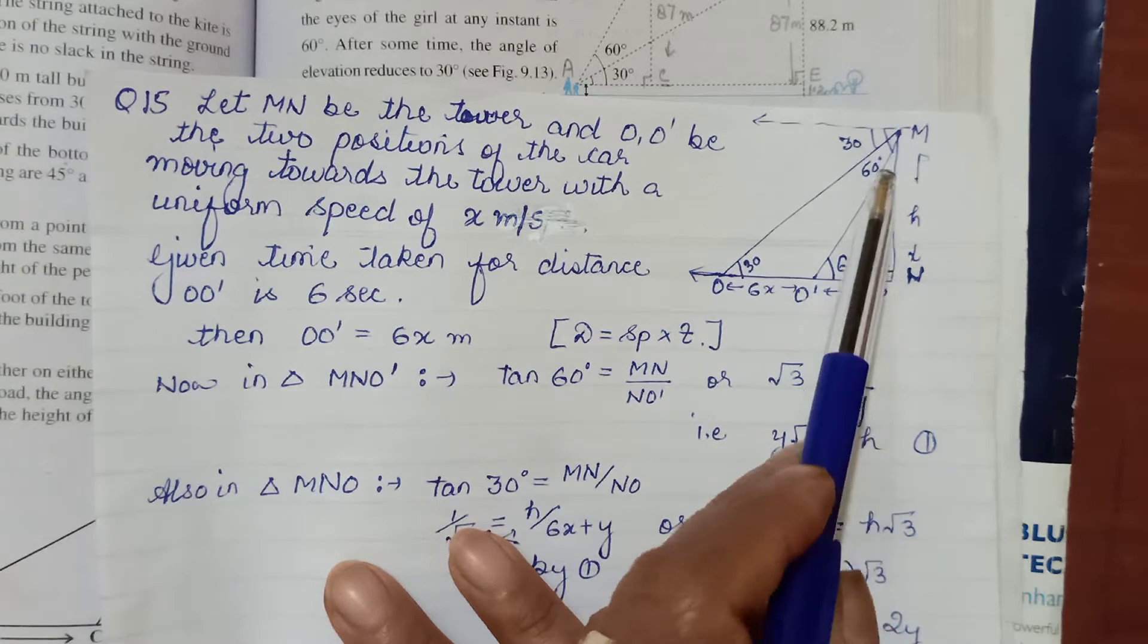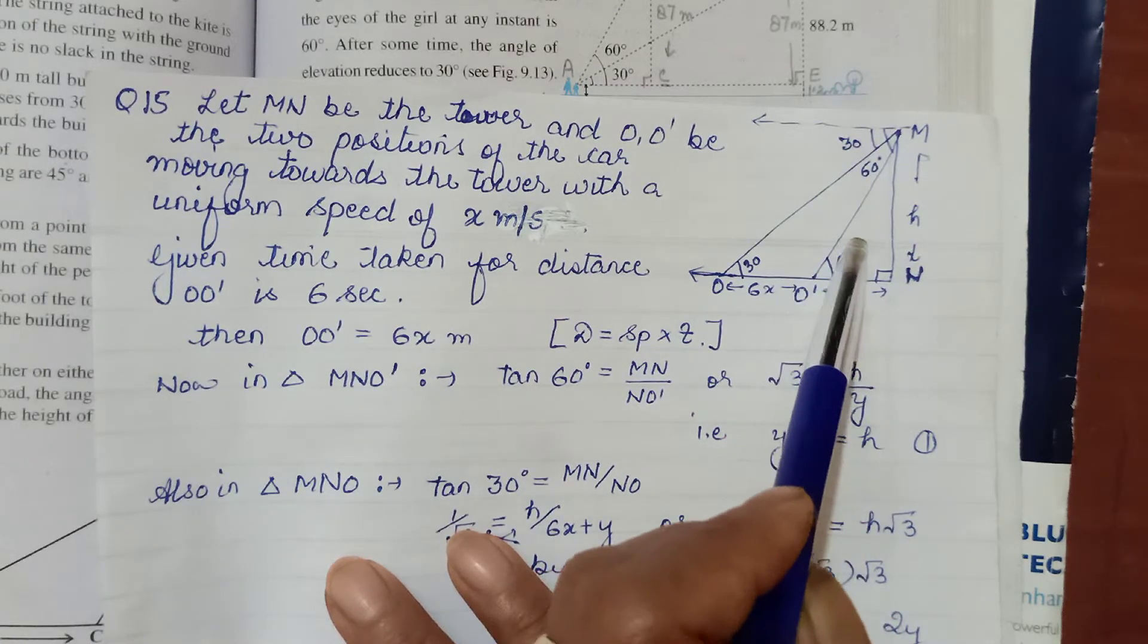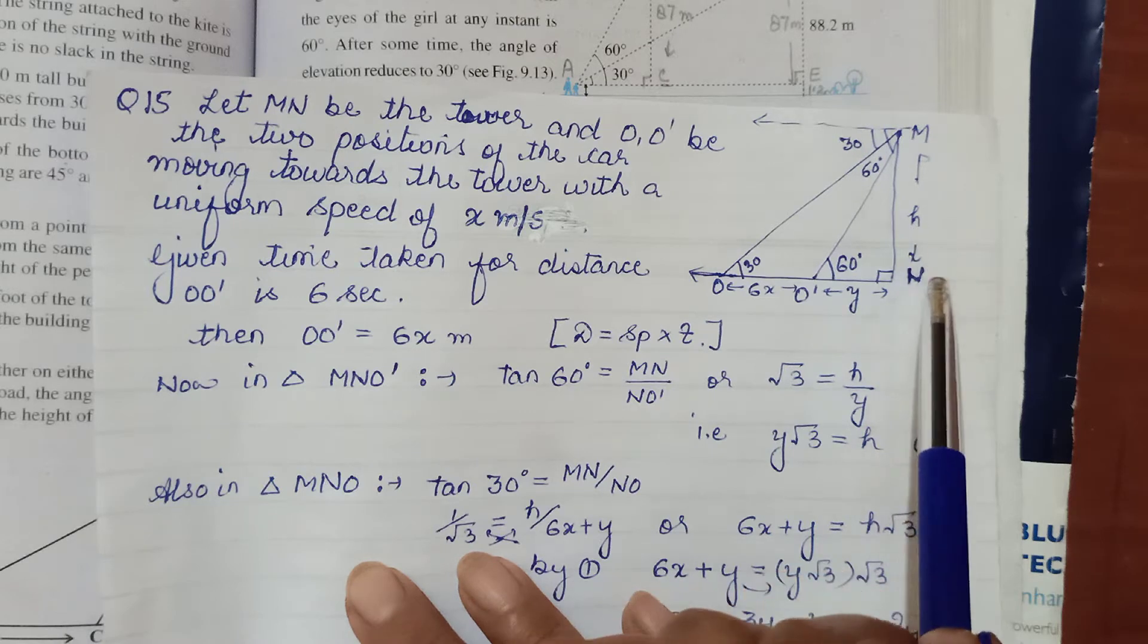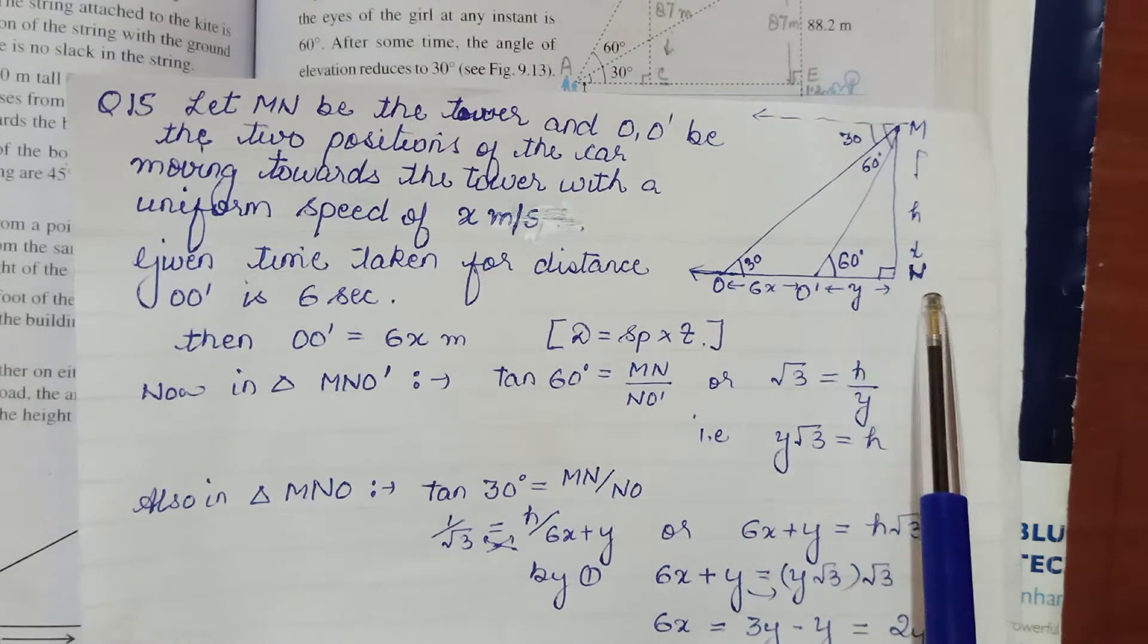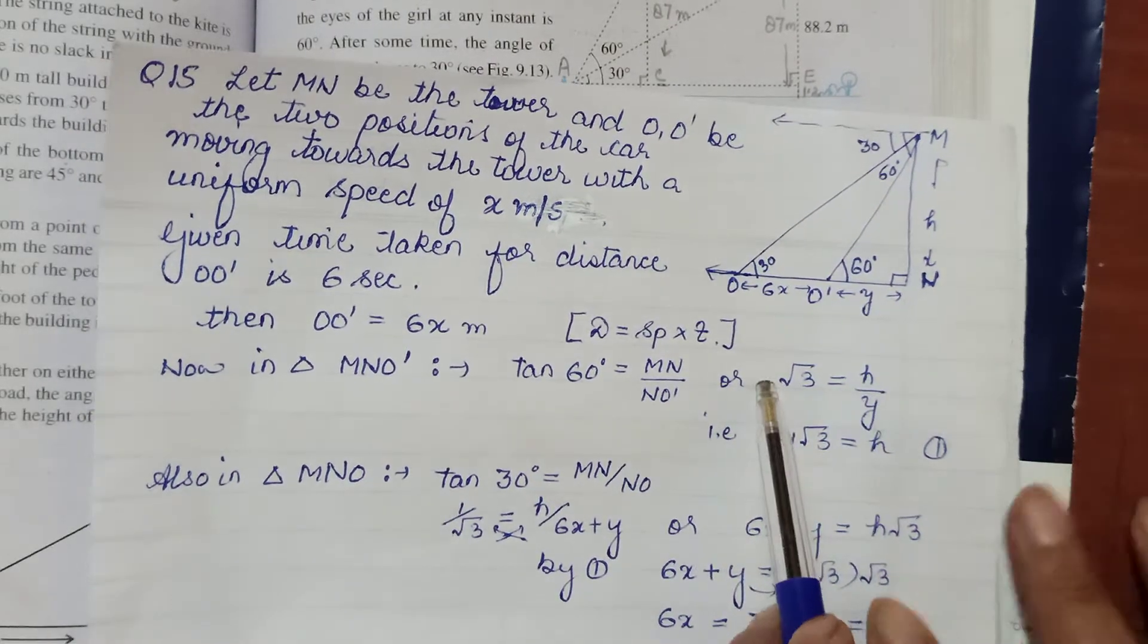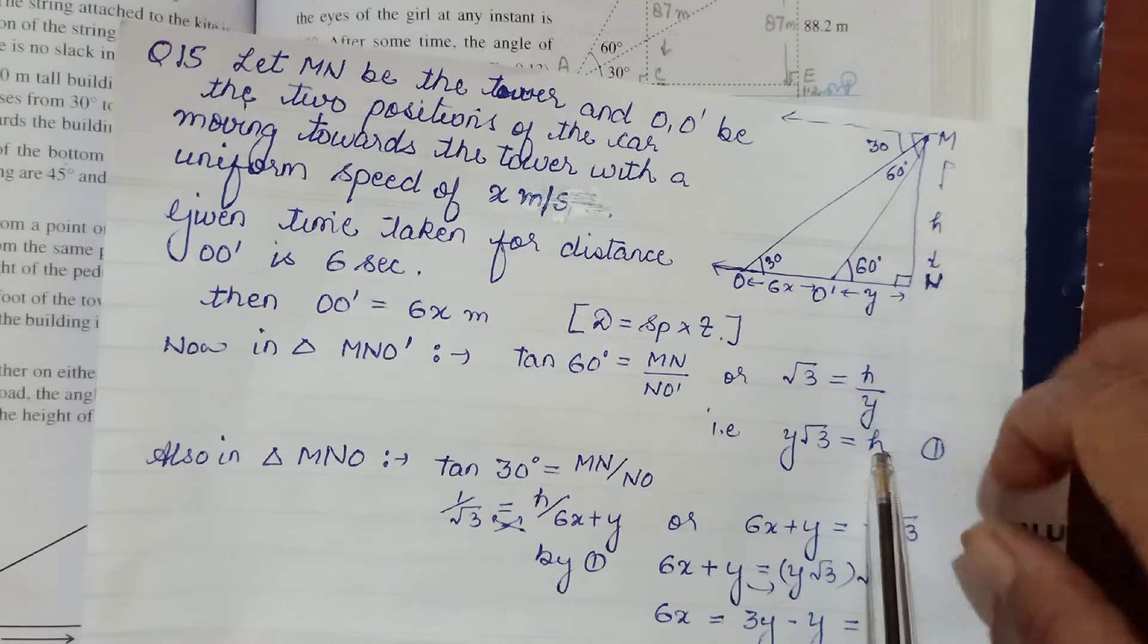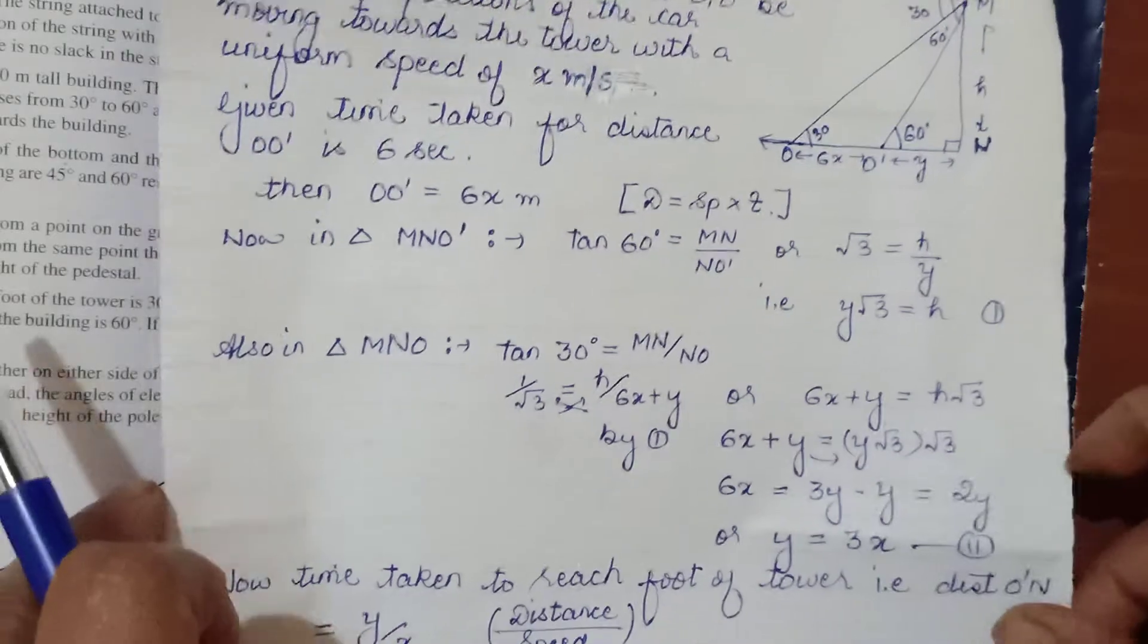Now coming to the right angle triangles. In right angle triangle MNO', this is the small one which has 60 degrees. So in triangle MNO', tan of 60 is opposite is H, MN upon base, which is equal to H upon Y. Opposite upon base. So cross multiplying, H is equal to root 3 times Y. This is one equation from this triangle.